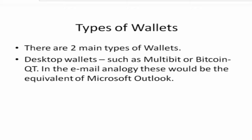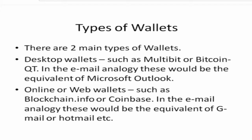There are two types of wallets when talking about Bitcoin. There's a desktop wallet such as Exodus, Multibit, or BitcoinQT — in the email analogy these would be the equivalent of Microsoft Outlook, something you access from your desktop. Then there are online wallets or web wallets such as Blockchain.info, Coinbase, Poloniex, or Bitfinex, as well as HitBTC — in the email analogy these would be the equivalent of Gmail or Hotmail. You have to go on a website and be connected to the internet to access your wallet, and it's also more susceptible to online hacking. So the safer of the two is definitely the desktop wallet.